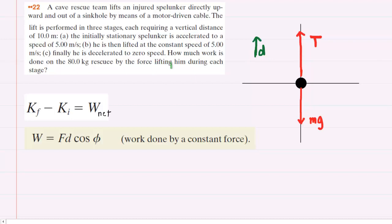In this question we are asked to determine how much work is being done on the spelunker by the force lifting him up. We've drawn a free body diagram showing two forces acting on the spelunker: the upward tension force and the downward gravitational force.